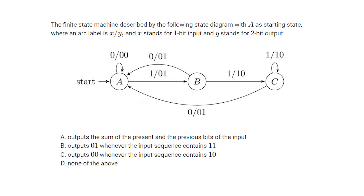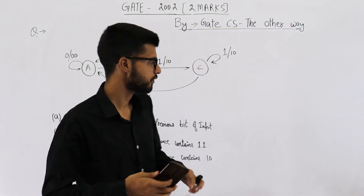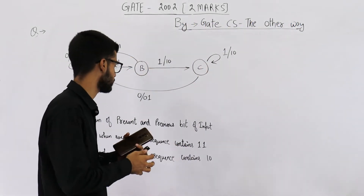Option A says outputs the sum of present and the previous bits of the input. Option B says outputs 0 1 whenever the input sequence contains 1 1. Option C says outputs 0 0 whenever the input sequence contains 1 0. Let us see which of these options is correct.